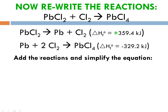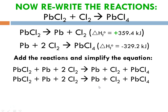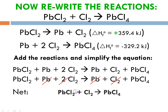Now we add these two together and then simplify — crossing out anything that appears the same on both sides. When we add this whole thing up, we have lead(II) chloride plus lead plus 2 chlorines yielding lead plus chlorine plus lead(IV) chloride. Lead and lead cross out. We have 2 chlorines on one side and 1 chlorine on the other, leaving us with 1 chlorine remaining. Our net equation is lead(II) chloride plus chlorine yields lead(IV) chloride, which matches the equation we were trying to form.